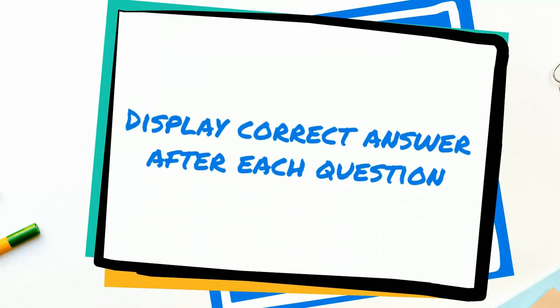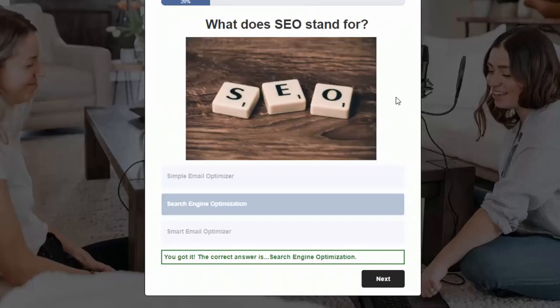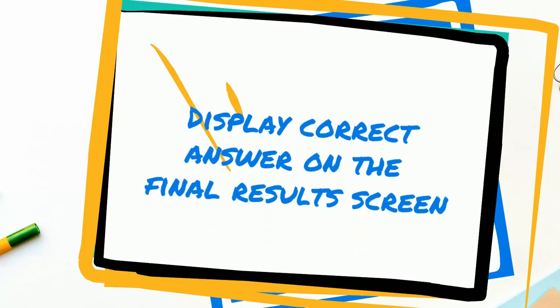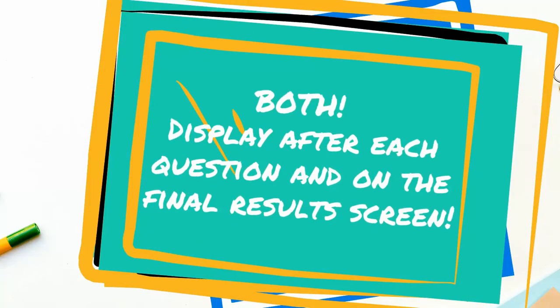I have configured SQB to display the correct answer on each question screen after they select an answer choice. But you don't have to do it this way — you can have SQB display the correct and incorrect answers on the final results screen. If you want to display it after each question and also on the final results screen, you can do that as well. You can configure this at quiz level, so you can use different configurations for different quizzes.